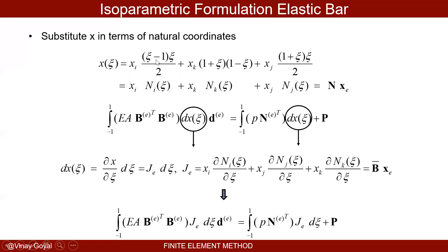Then dx = J·dξ, where J = ∂x/∂ξ = B̄ bold · X bold. The B̄ bold row vector contains the derivatives ∂N_i/∂ξ, ∂N_j/∂ξ, ∂N_k/∂ξ, and the column vector has x_i, x_j, x_k. I call the derivative row vector B̄ bold here, and using chain rule: ∂N_i/∂x = (∂N_i/∂ξ)·J⁻¹. The same applies for N_j and N_k. J inverse factors out from all of them, giving B bold = B̄ bold · J_E⁻¹.